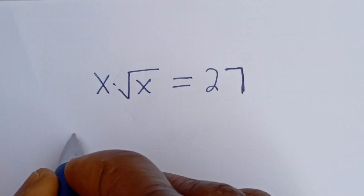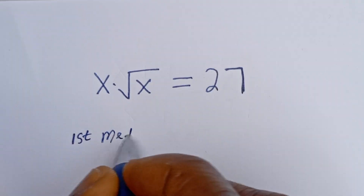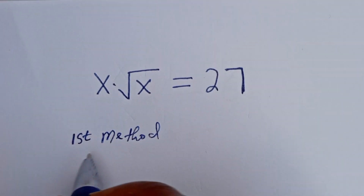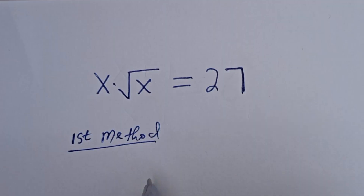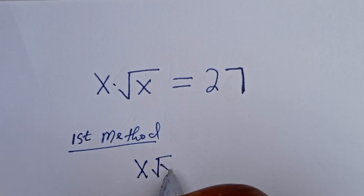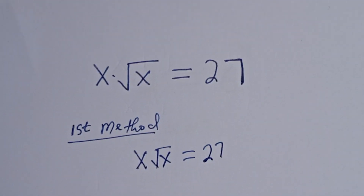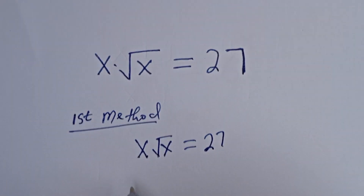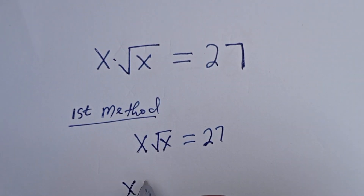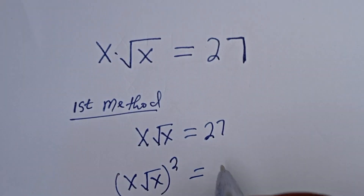Let's consider the first method. We have S multiplied by root of S is equal to 27. Then let's square both sides of this equation.